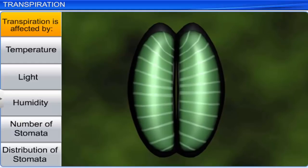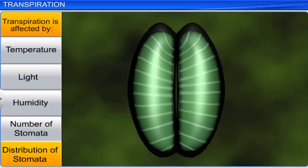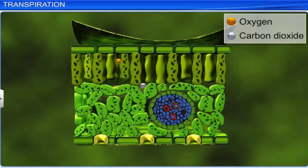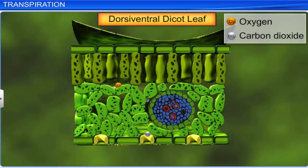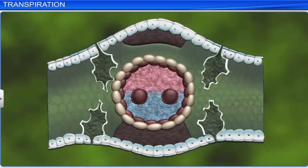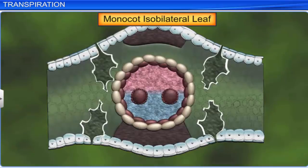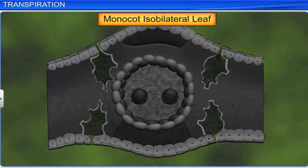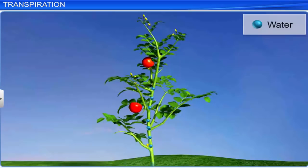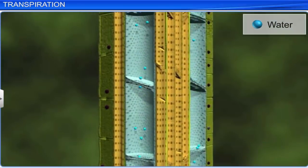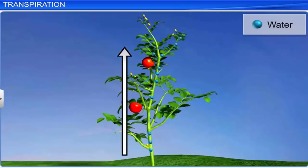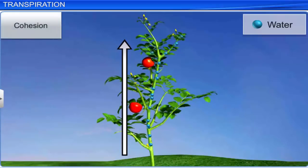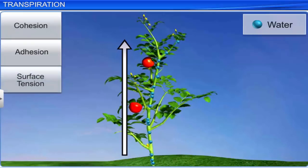Transpiration is affected by both external factors like temperature, light, humidity, etc., and plant factors like the number and distribution of stomata. Typically, the lower surface of a dorsiventral dicot leaf has a greater number of stomata. On the other hand, a monocot isobilateral leaf has an equal number of stomata on both surfaces. Transpiration from stomata causes a pull that causes the upward ascent of water in xylem cells. This transpiration pull is made possible by three physical properties of water: cohesion, adhesion, and surface tension.